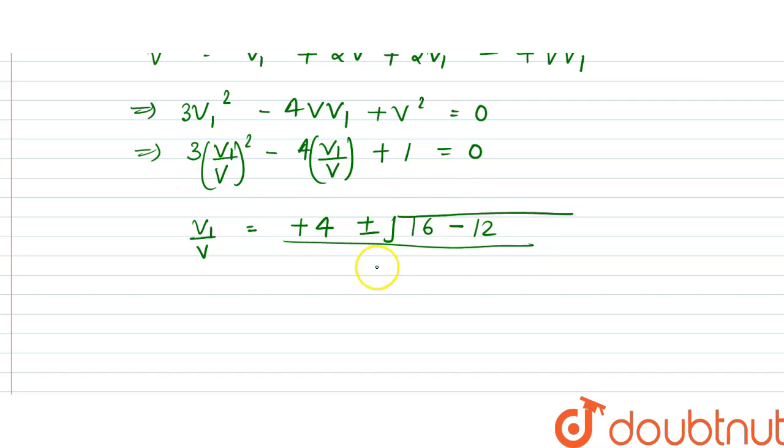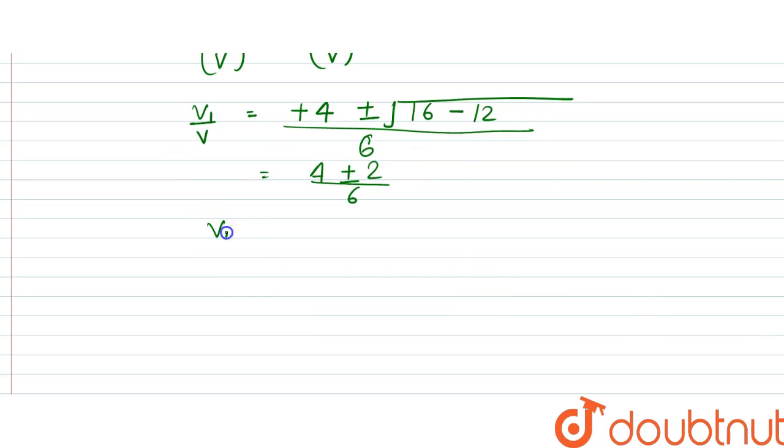which is (4 ± 2) / 6. So either it gives the value v₁ equals v or v₁ equals v/3. These are the